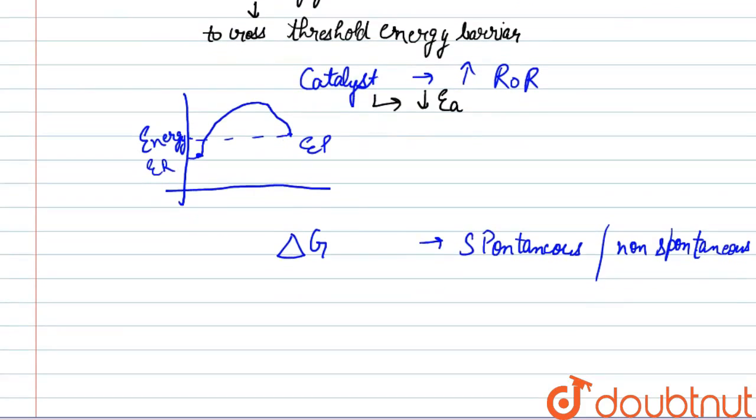If the value of delta G is negative, then the reaction is spontaneous, that is, it will take place on its own in the system. If the value of delta G is positive, it will be non-spontaneous.